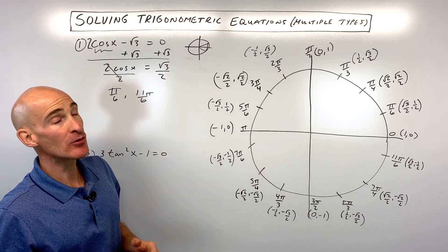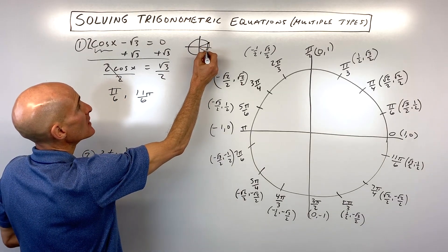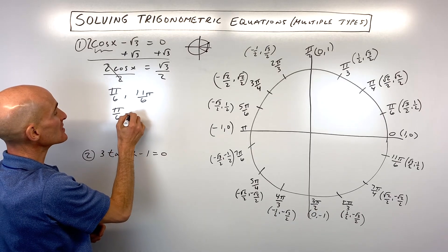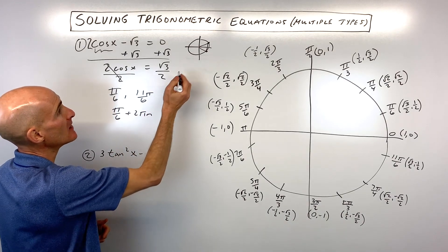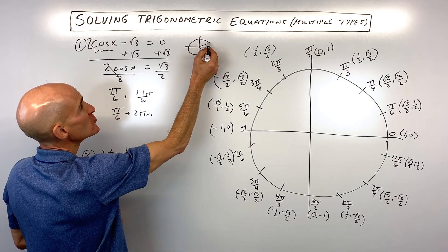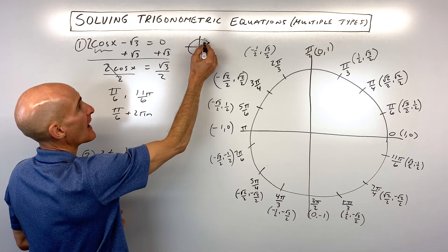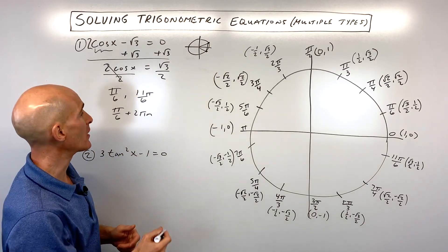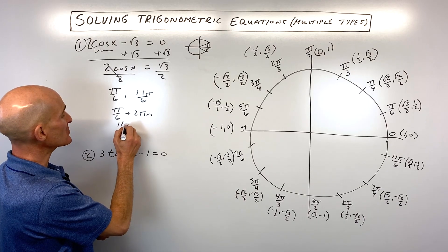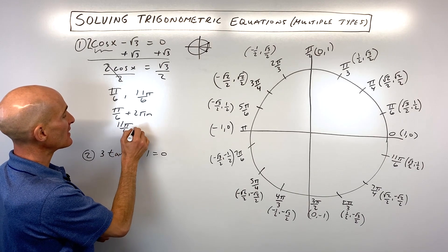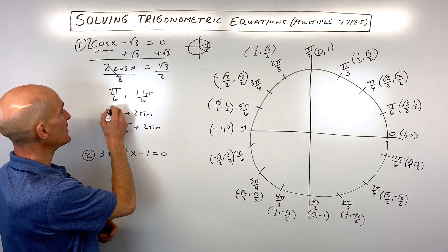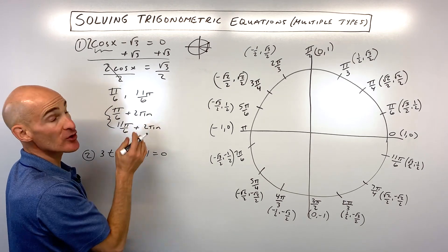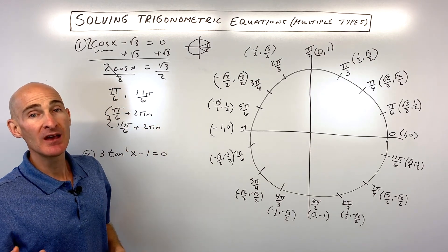If we want to write a general solution, at these points we can say π/6 + 2πn, meaning that if we add multiples of 2π, we end up at that same point on the circle where cosine equals √3/2. Same thing with 11π/6: we can say 11π/6 + 2πn. This is our general solution. And π/6 and 11π/6 is our solution if it just asks from 0 to 2π.